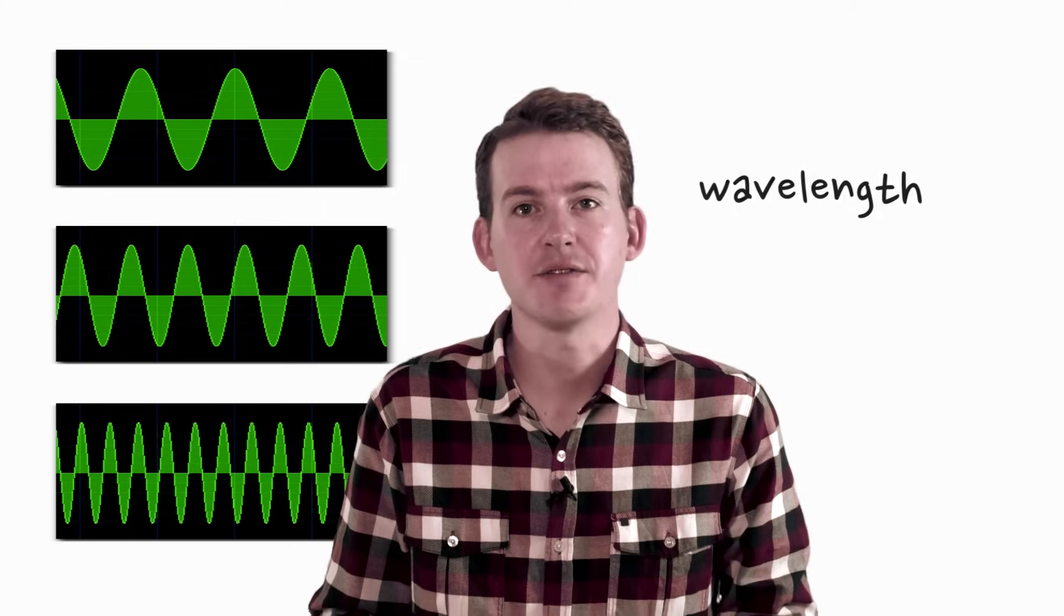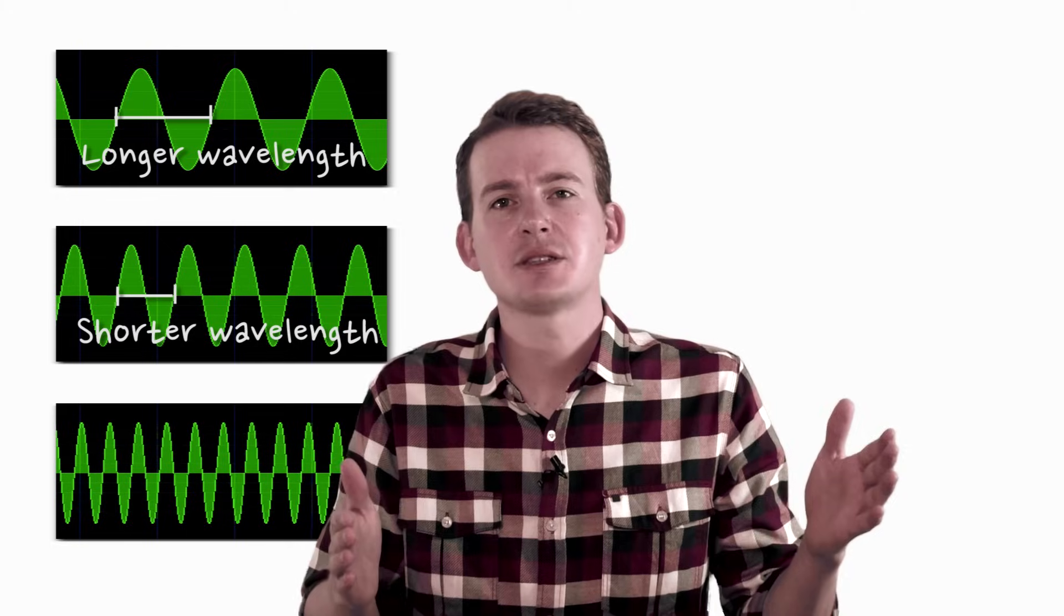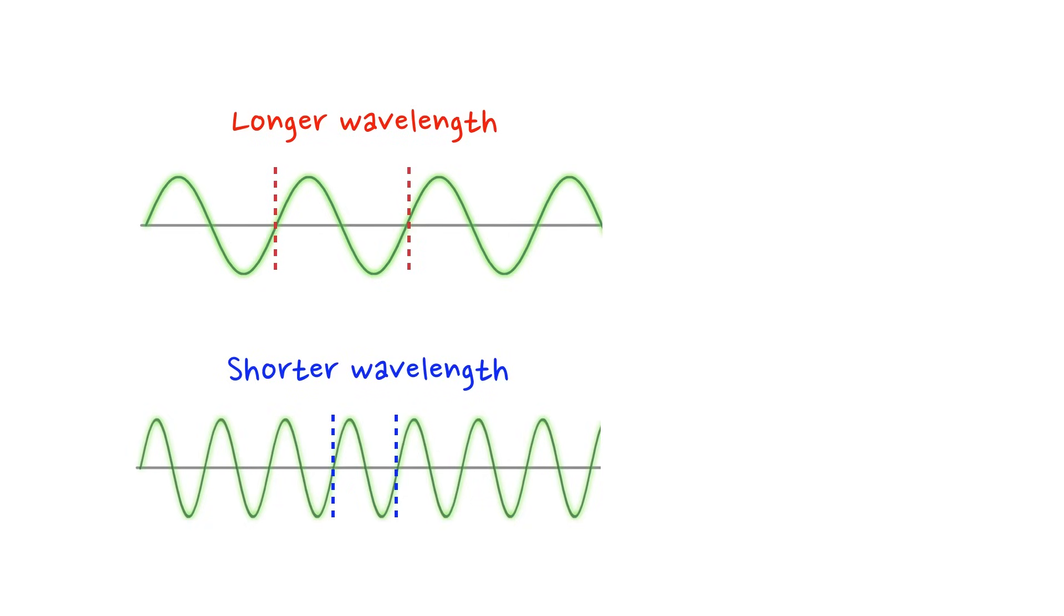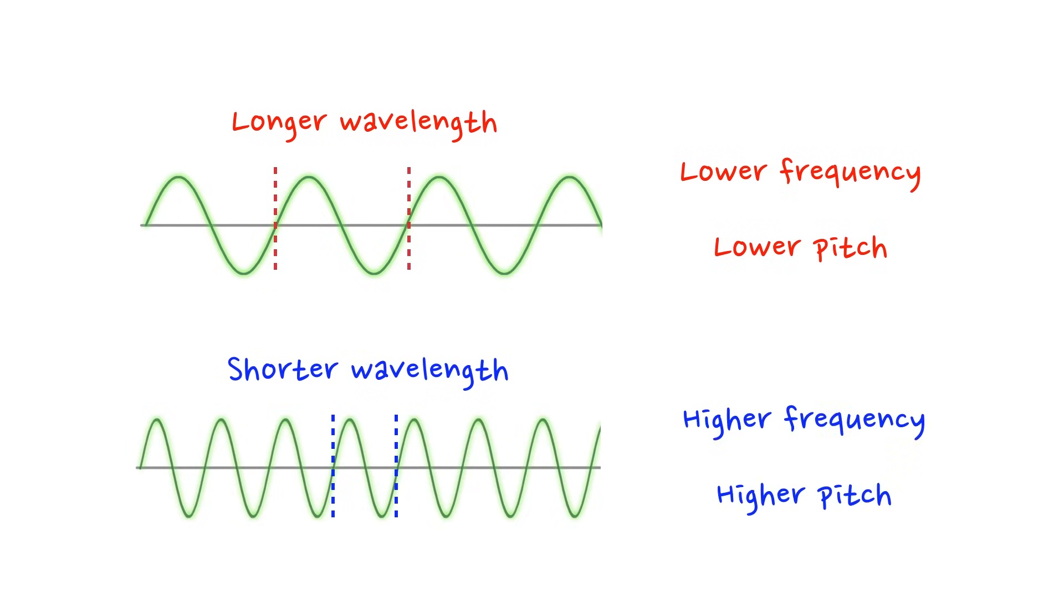As you can see, the transverse wave shape is changing, but what exactly do these shape changes mean? Well, the first thing to notice about a transverse wave is how wide it is, and this is referred to as the wavelength. If we have a longer wavelength, this means that we have fewer pulses in any unit of time, which means we have a lower frequency and therefore a lower pitch. By contrast, of course, if we've got a shorter wavelength, it means that we've got more pulses in any unit of time, therefore a higher frequency and a higher pitched sound.